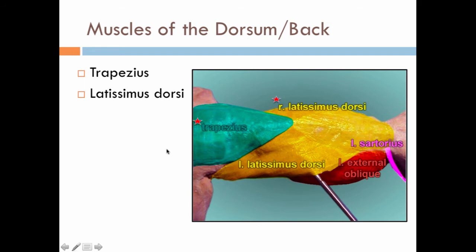Muscles of the dorsum or back — and remember from our figure of anatomical position that the dorsum or back is actually a superior view. The muscles are the trapezius, seen here, with the head right here, and the latissimus dorsi. The trapezius helps to extend the neck, and the latissimus dorsi is known as the swimmer's muscle.